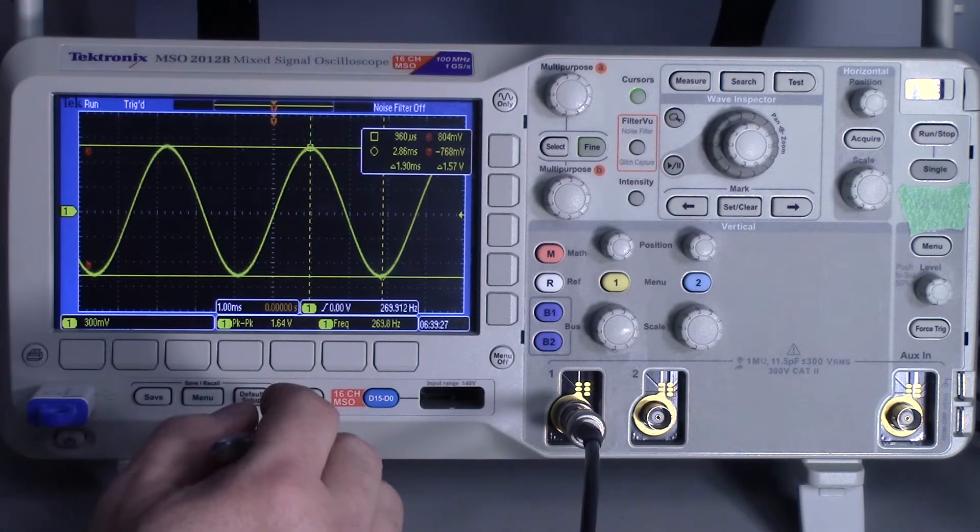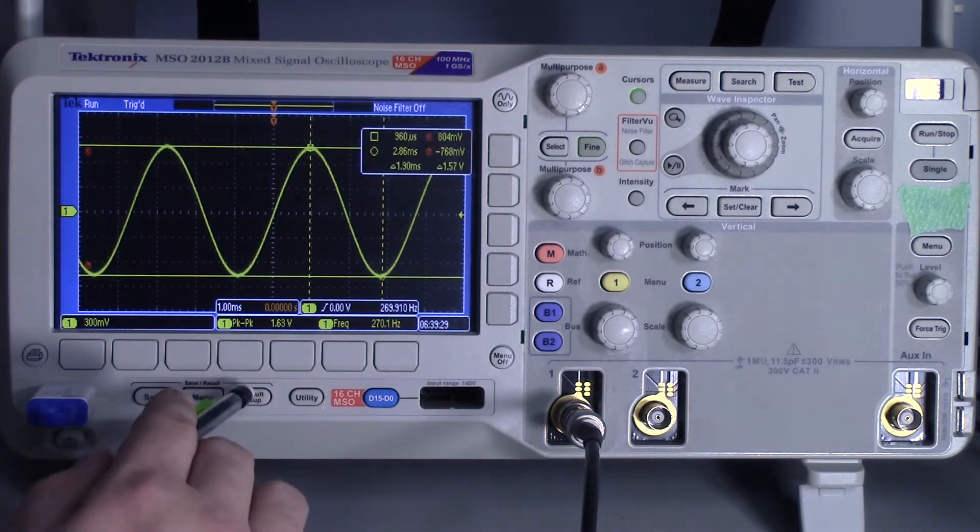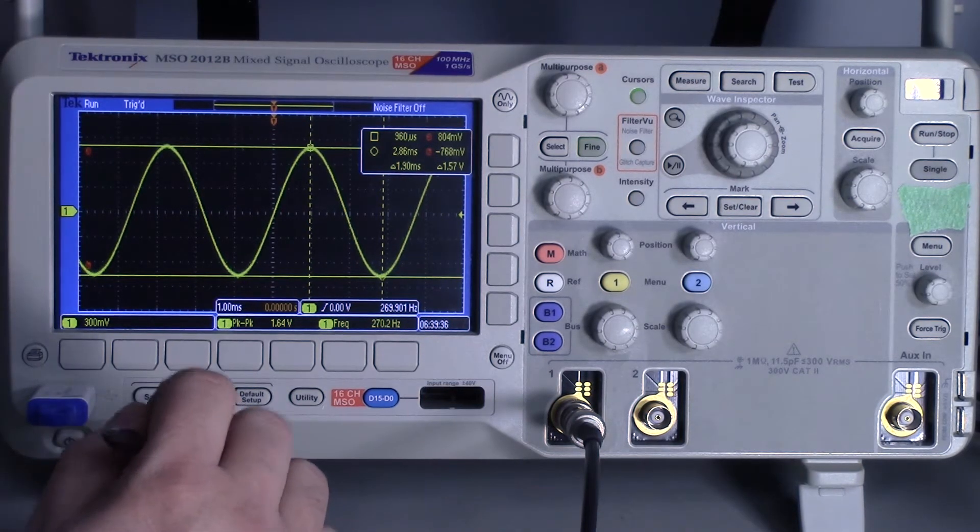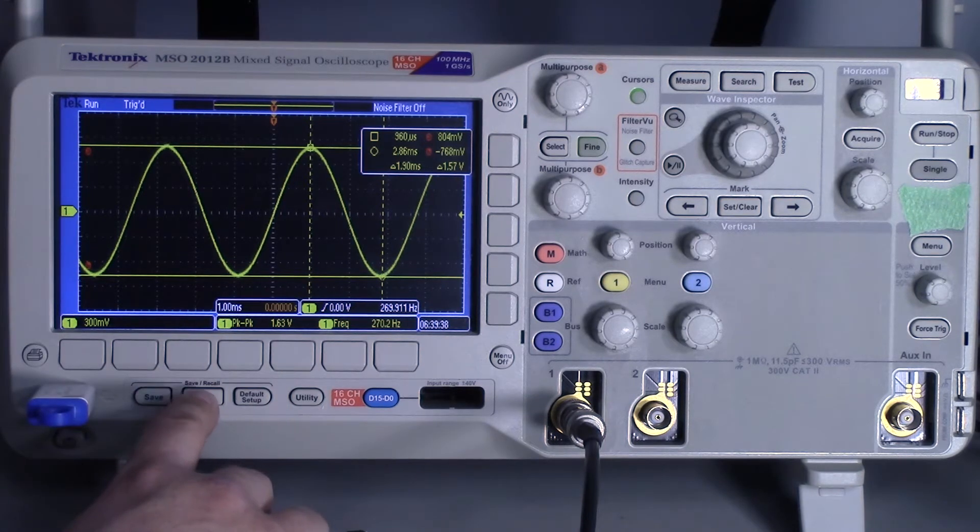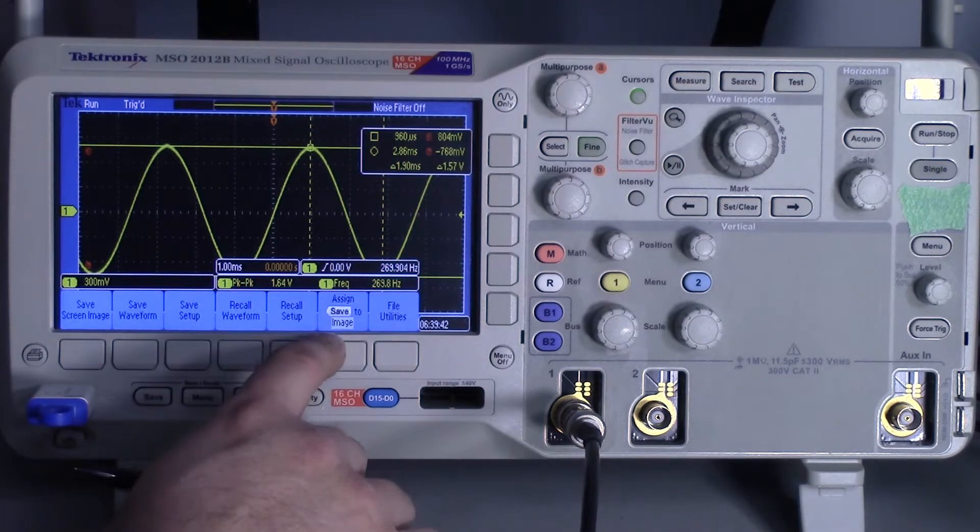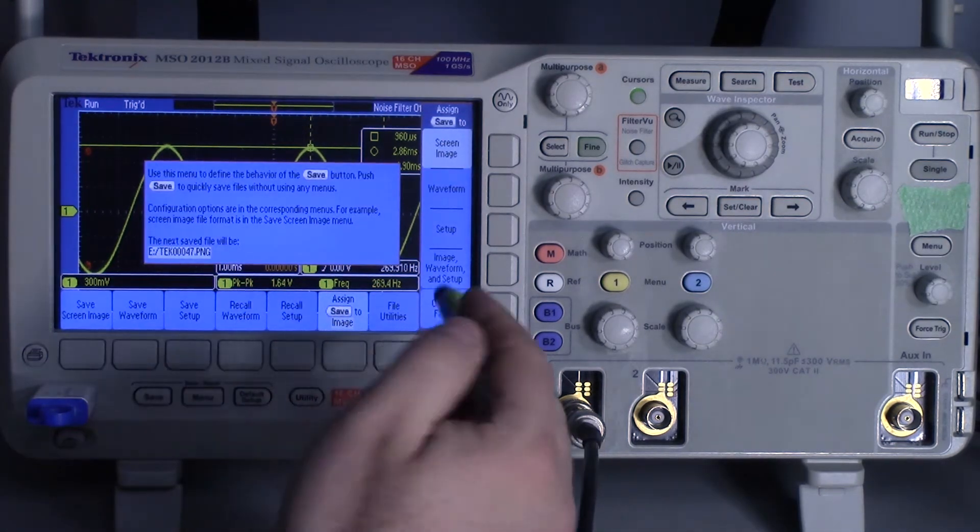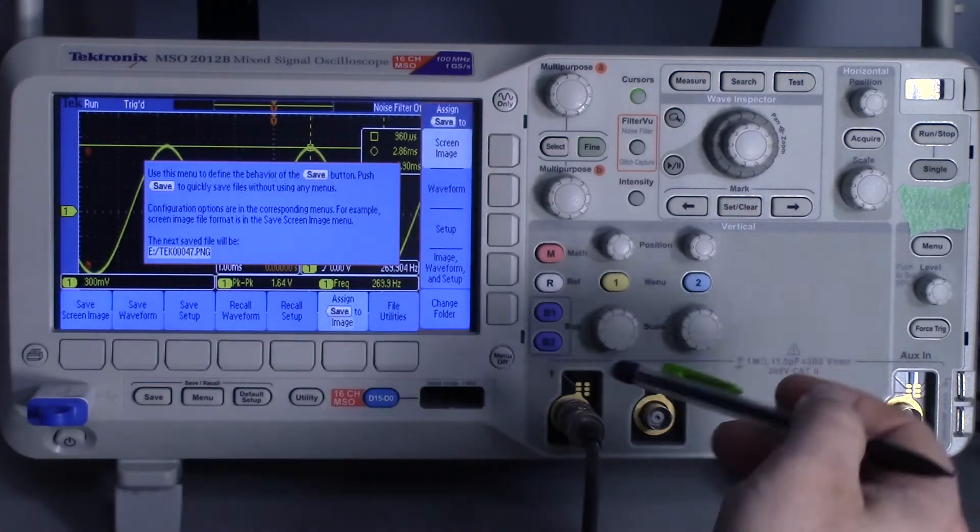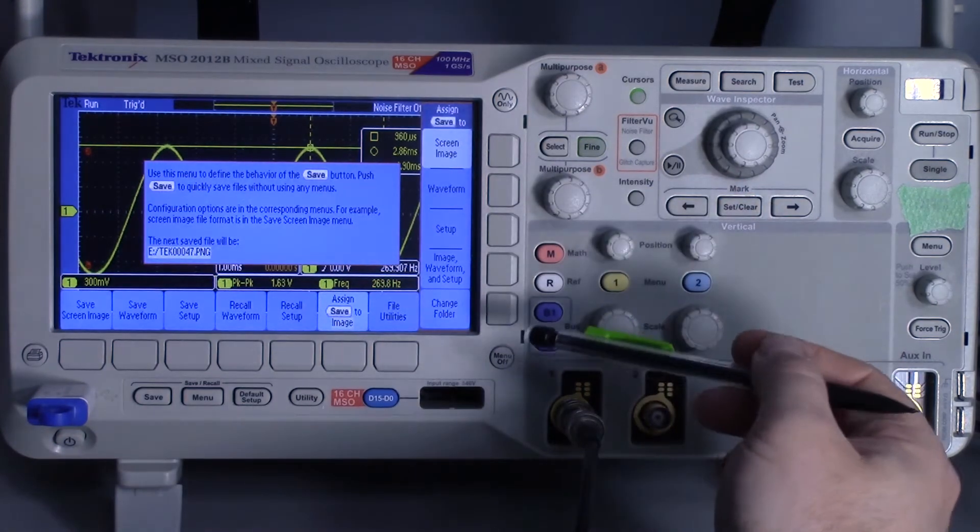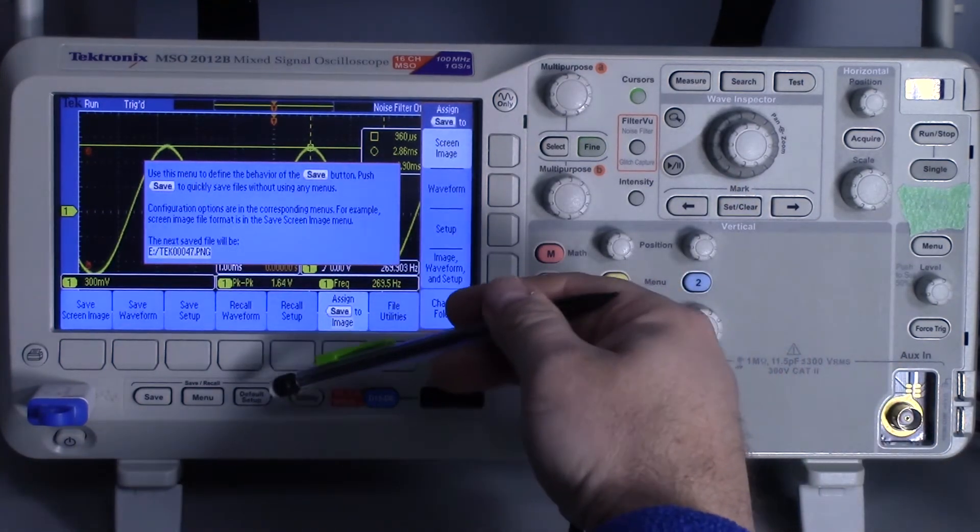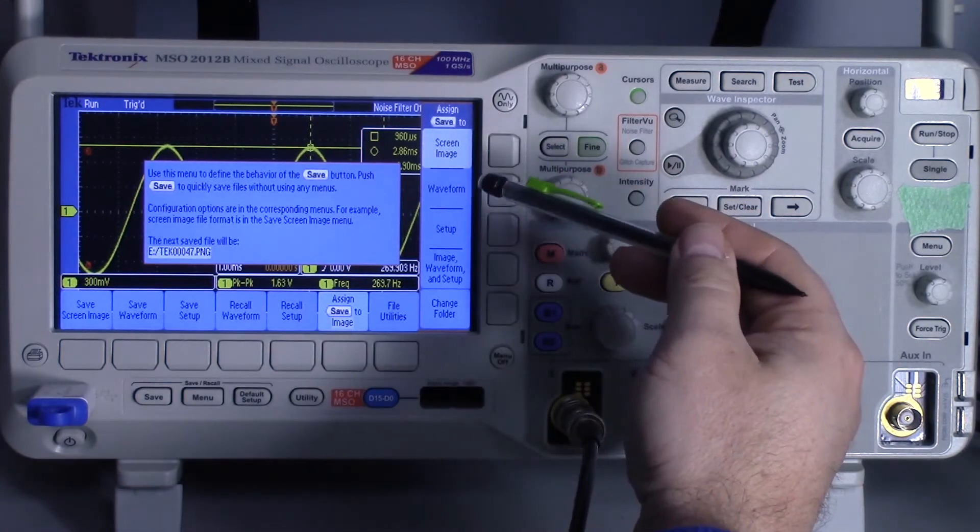The default setup button does not set this button to some kind of default, so you always want to go to menu and assign save to image. We can assign any of these three, or all three. I always recommend to make sure that you go at the beginning of the lab to hit your default setup, and then make sure you save what you want.